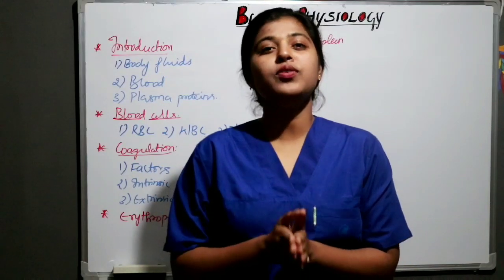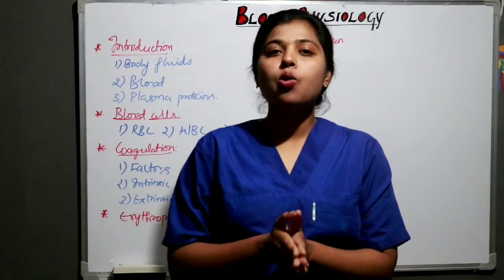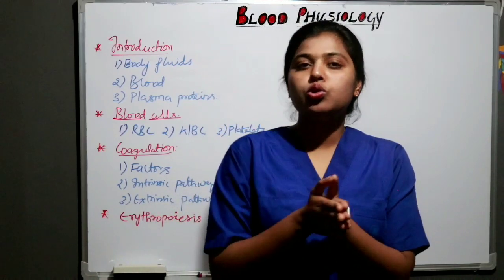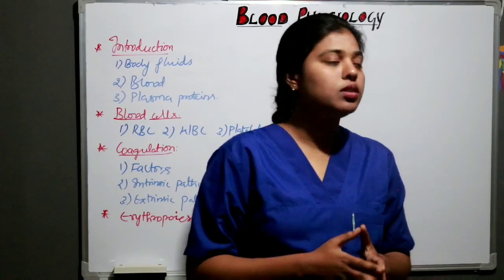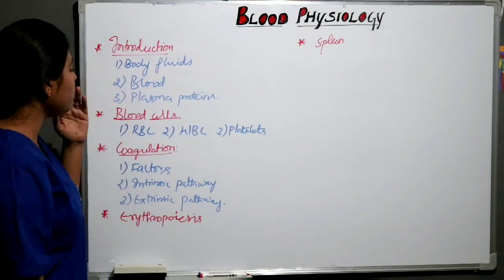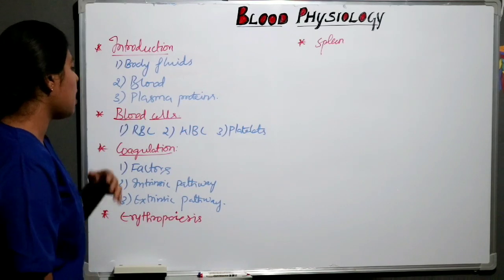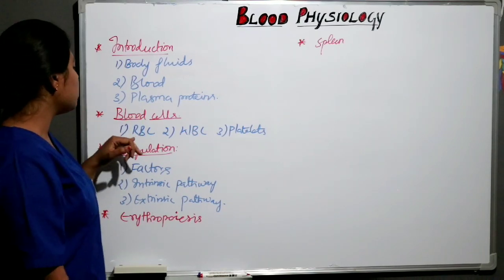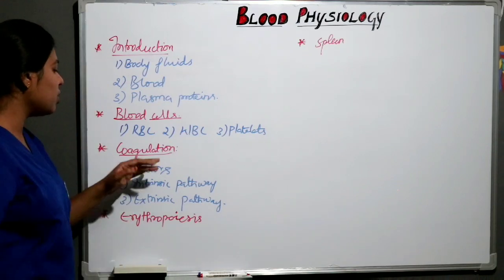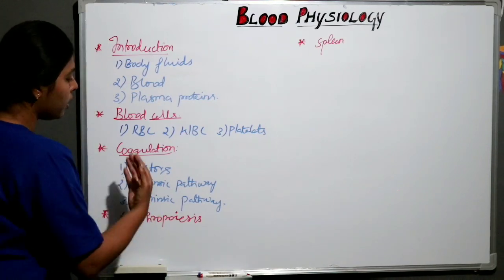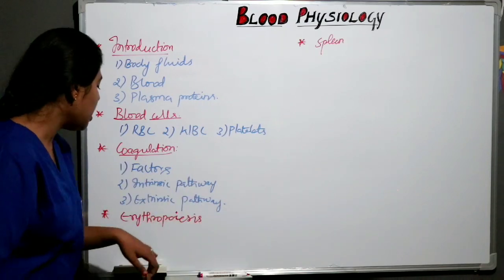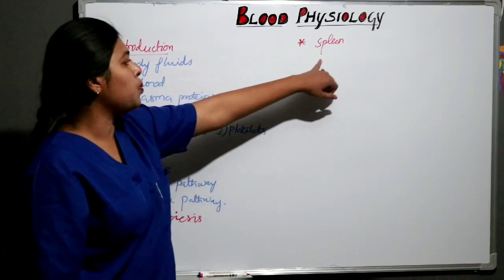Hi everyone, it's me Kavanalabu. Welcome to our channel. No matter how less time you have, keep preparing. Hard work always pays. So today our topic is blood physiology. In blood physiology we are going to study body fluids, blood, plasma proteins and blood cells — red blood cells, white blood cells and platelets. In coagulation we will study the factors of coagulation, intrinsic pathway and extrinsic pathway of coagulation, then erythropoiesis and spleen.